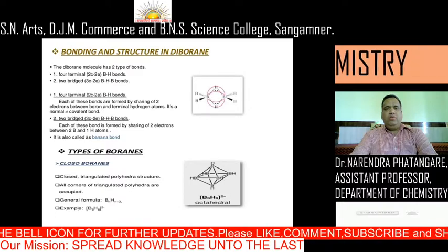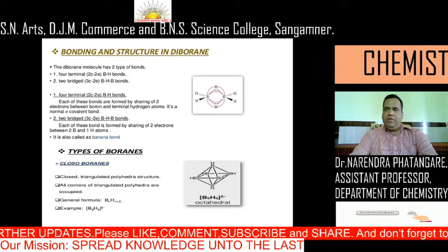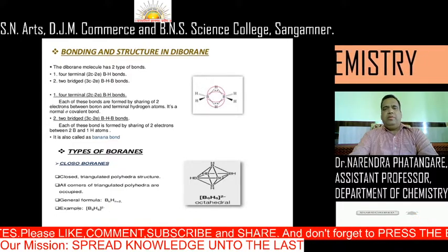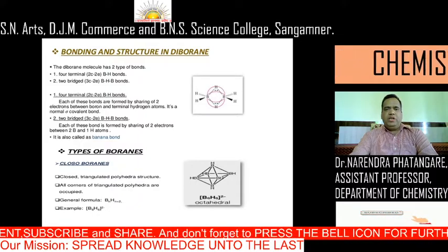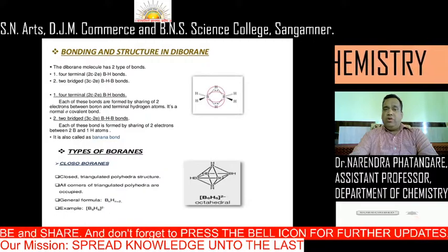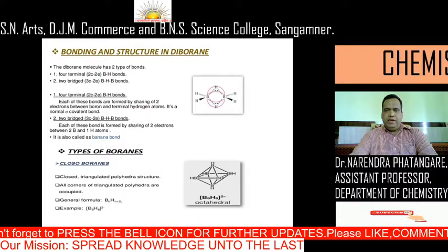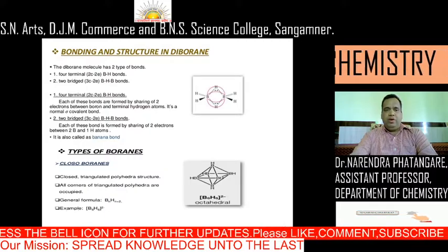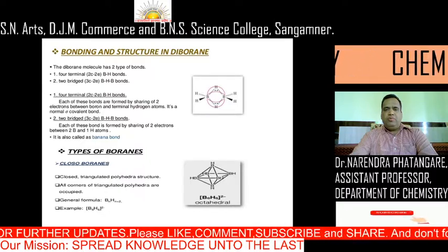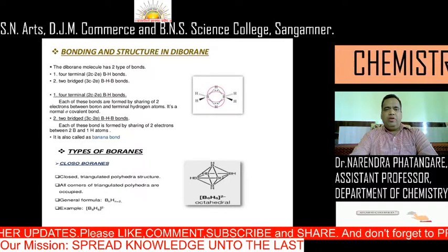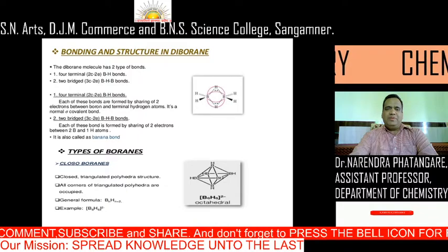In diborane, there are two types of bonding. Four terminal B-H bonds are two-center two-electron type bonds. Two bridged bonds are three-center two-electron bonds. Each of the four terminal two-center two-electron B-H bonds is formed by sharing of two electrons between boron and a terminal hydrogen atom — it is a normal sigma covalent bond. The two bridging three-center two-electron B-H-B bonds are formed by sharing of two electrons between two borons and one hydrogen atom; these are called banana bonds.